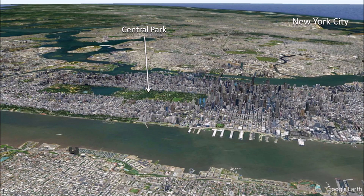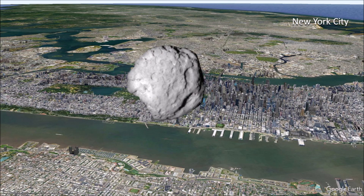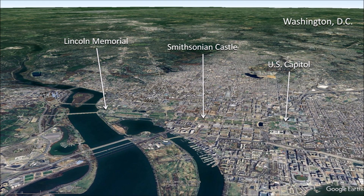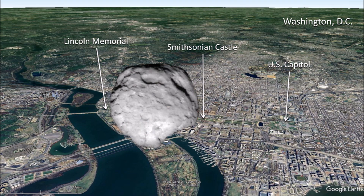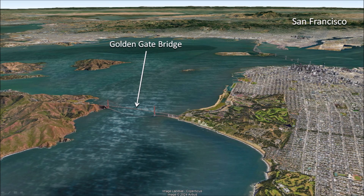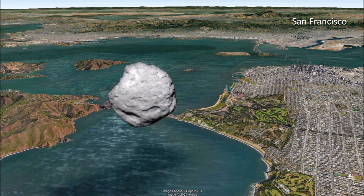New Yorkers can understand the comet's size by comparing it to Central Park: it would cover half of Central Park from West 59th Street to West 85th Street. Those familiar with Washington DC can compare it to the National Mall — the 2 km comet would fit between the Lincoln Memorial and the Smithsonian Castle. Californians can compare it to the Golden Gate Strait, which is the entrance between the Pacific Ocean and San Francisco Bay.